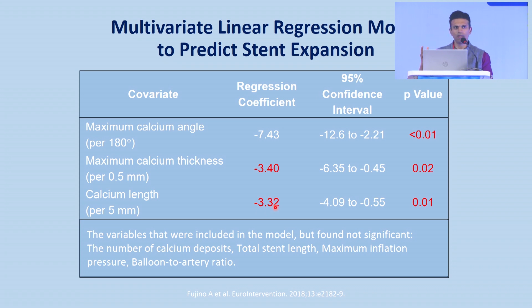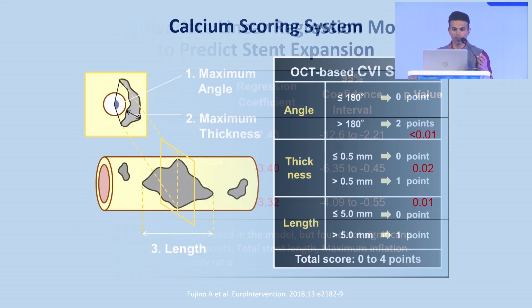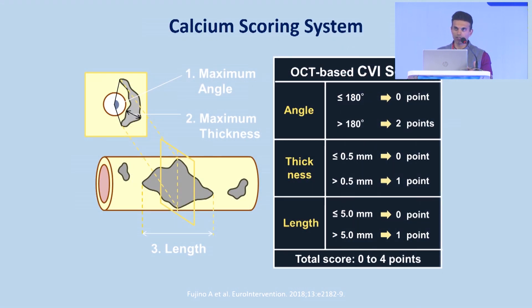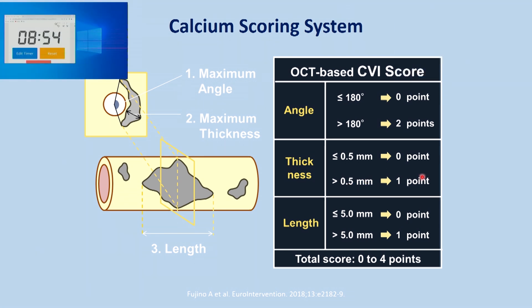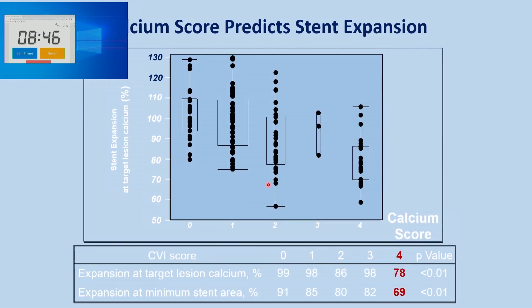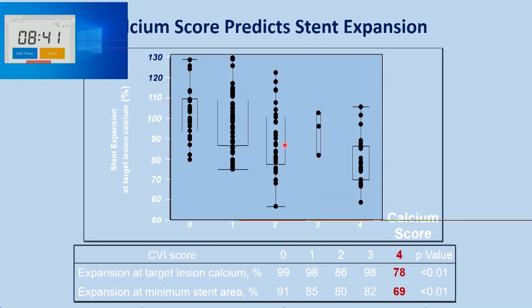They then developed a calcium scoring system based on OCT: if your angle is greater than 180 degrees, you get two points; if your calcium thickness is greater than half a millimeter, you get one point; if your length is greater than 5 millimeters, you get one point. When you had more than two points, you had a problem and needed to do something. But when they looked at the actual predictors of calcium fracture — what we're trying to achieve when we modify calcium — we need the calcium to break in more than one place so that when you take an NC balloon, you don't just fulcrum, but actually create a space where the adventitia becomes your limiter again, not the calcification.